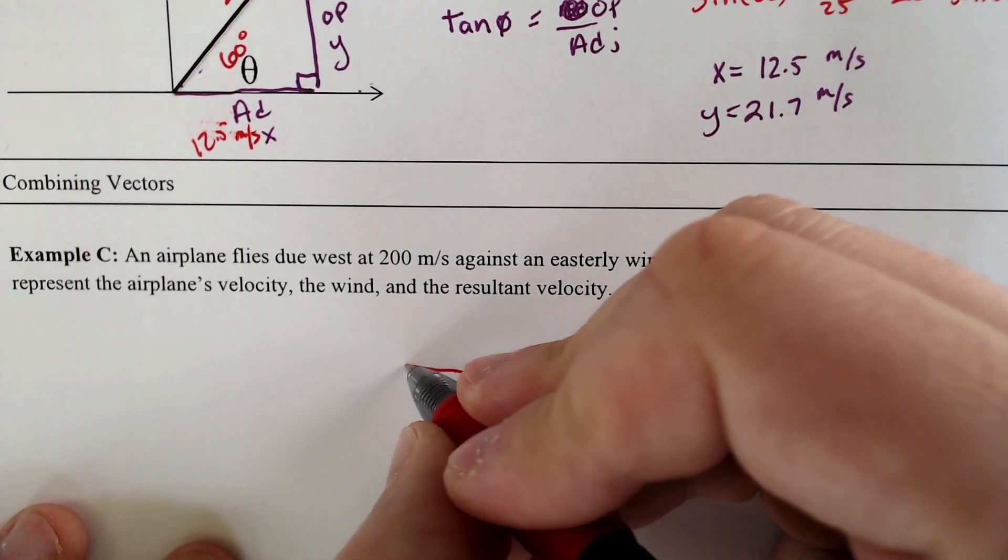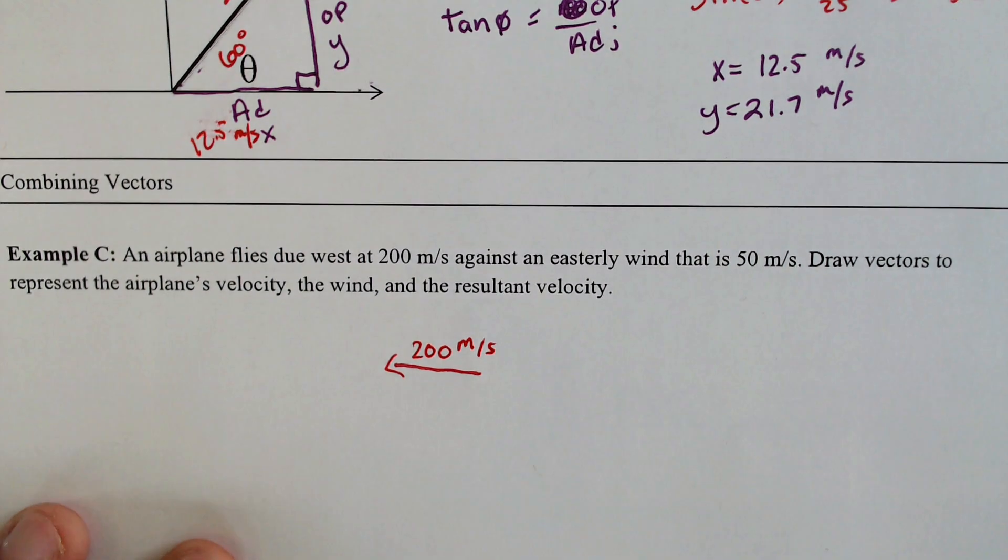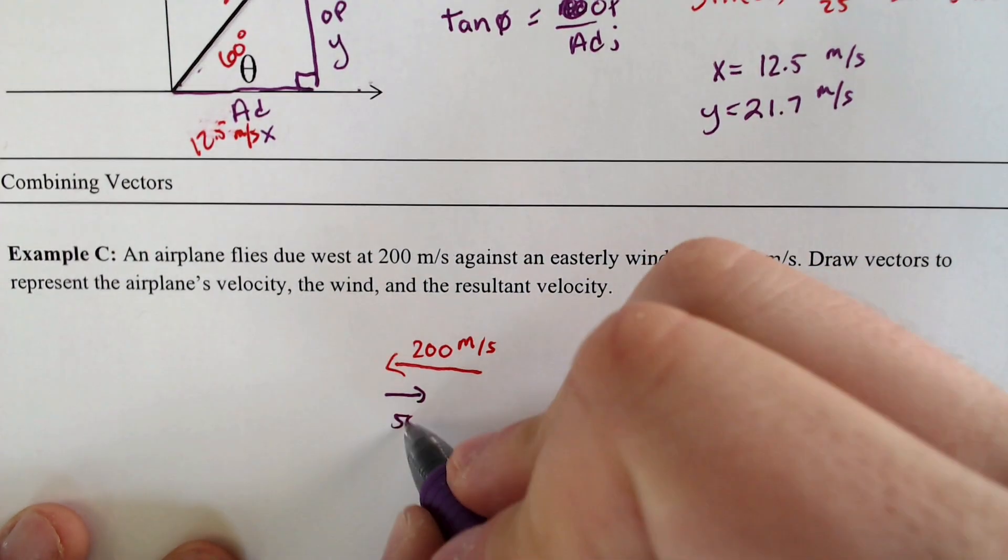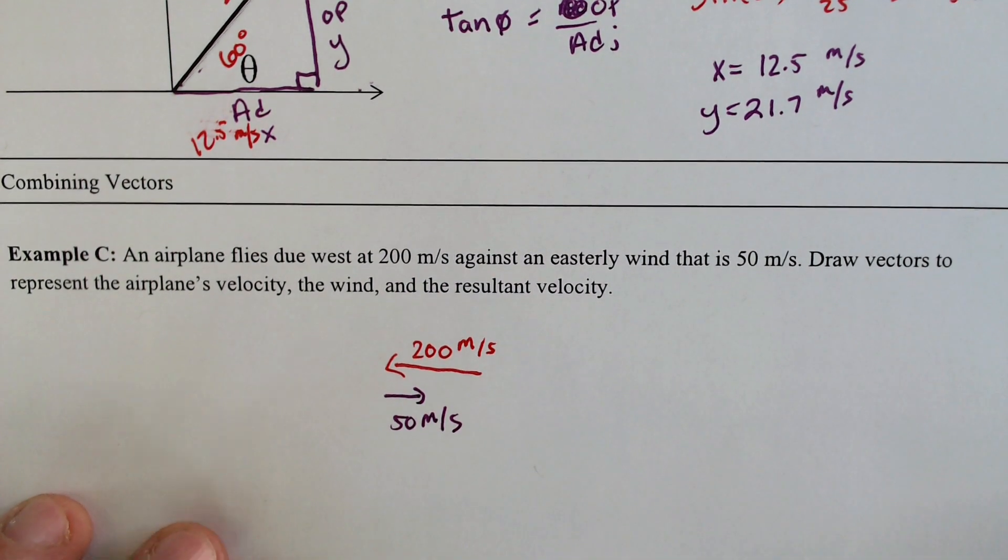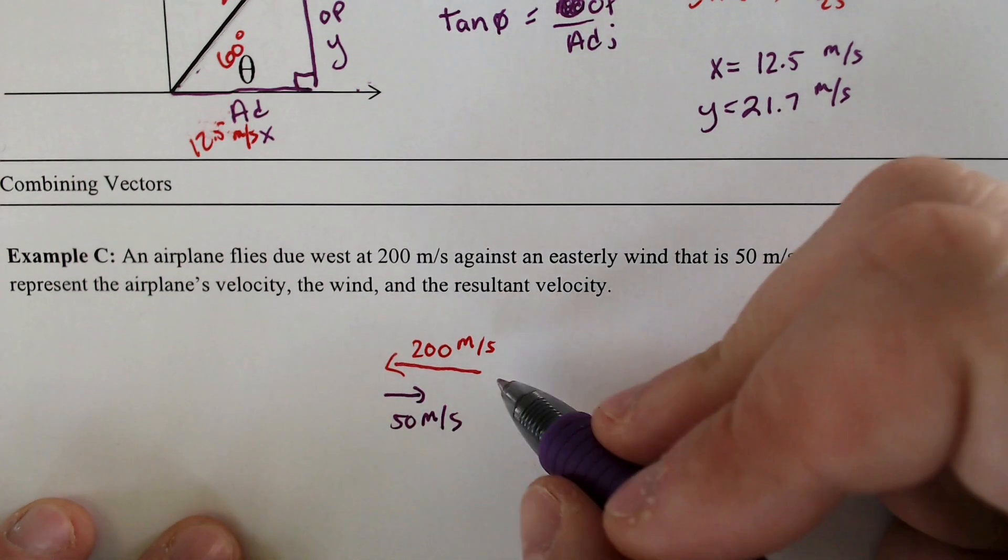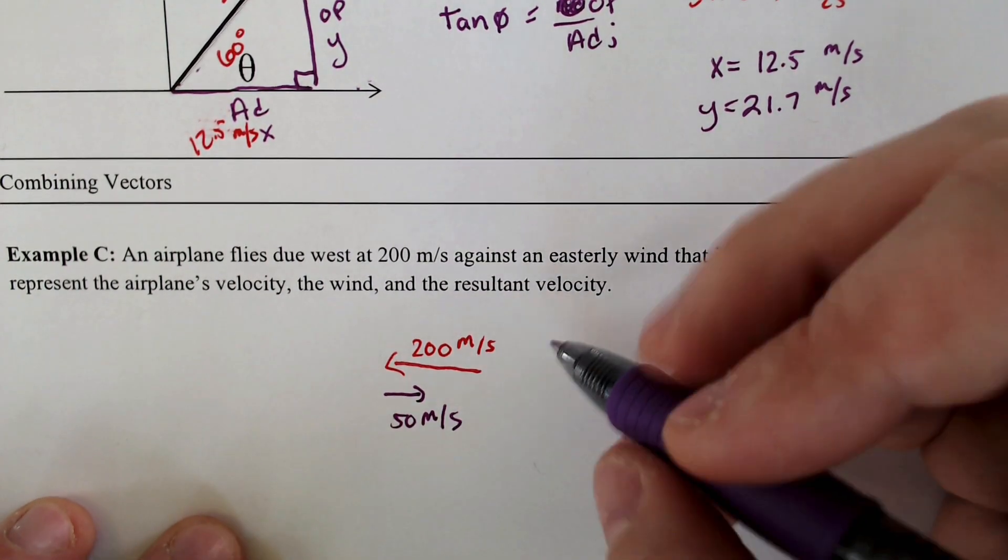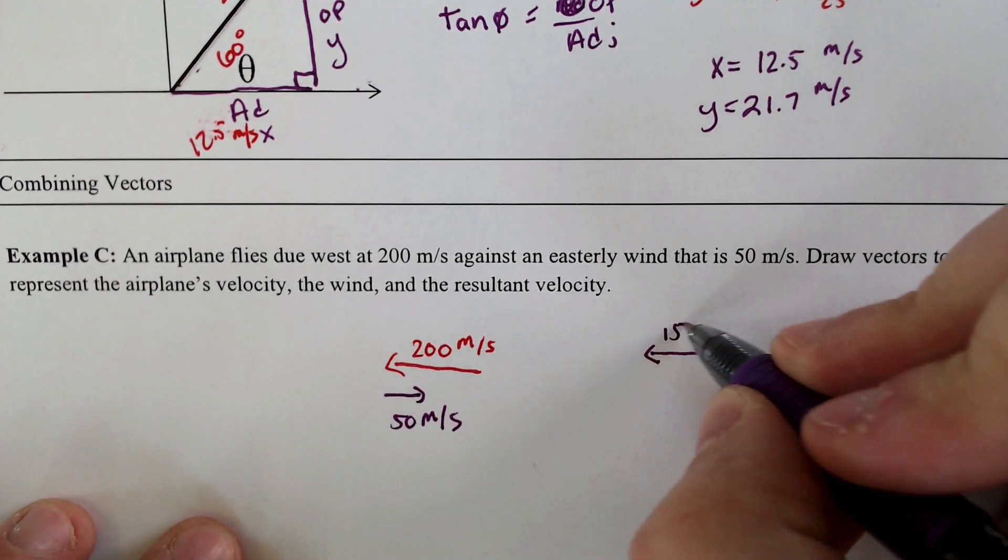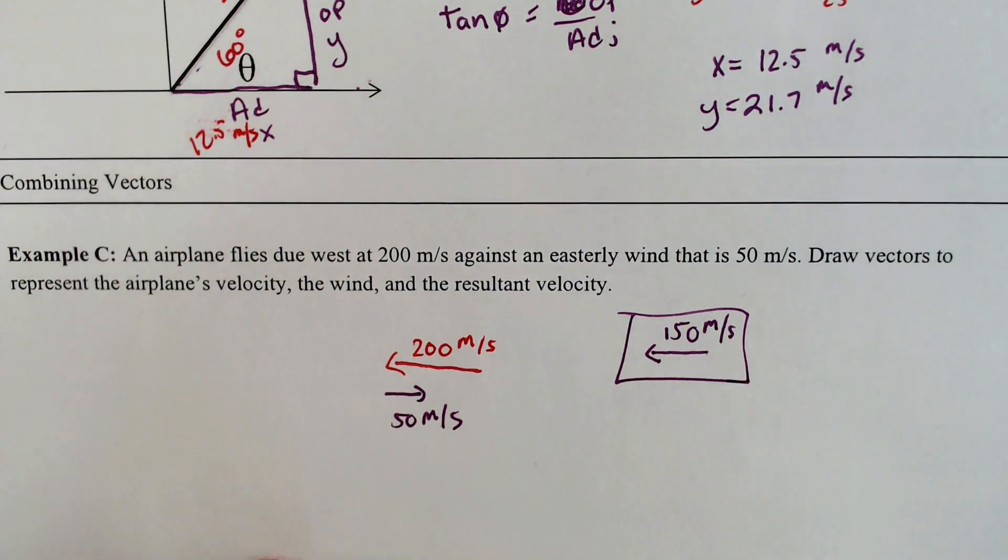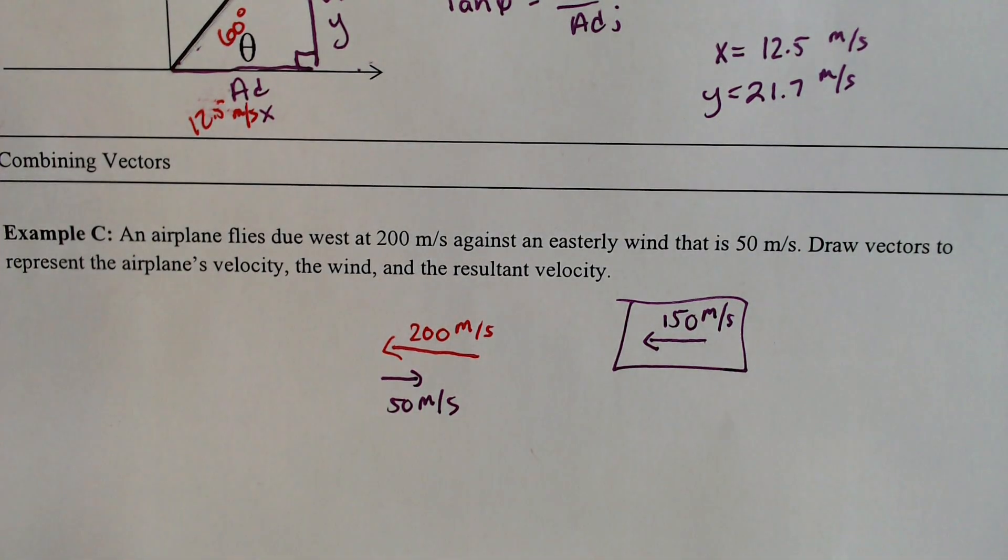Well, if you are going west at 200 meters per second, and the wind is pushing you easterly at 50 meters per second, what would happen to the relative velocity of the airplane? Well, the relative velocity of the airplane would be taken and being pushed back by that 50 meters per second. So the airplane is really only going 150 meters per second, which is going to relay into the next part, which is going to be adding and or subtracting vectors.